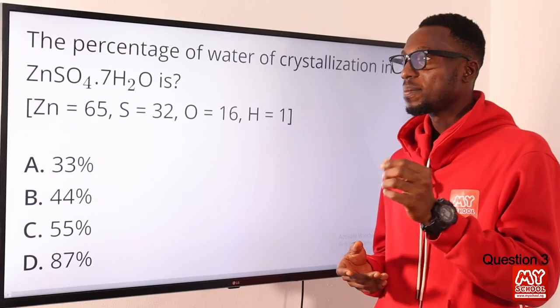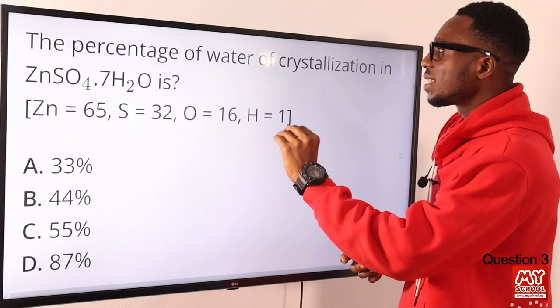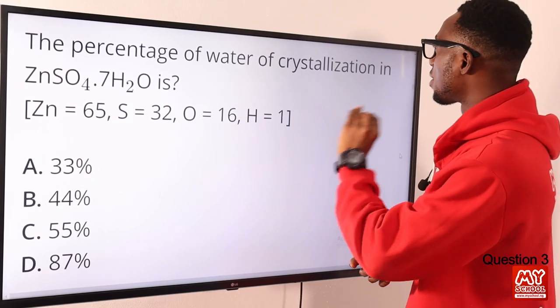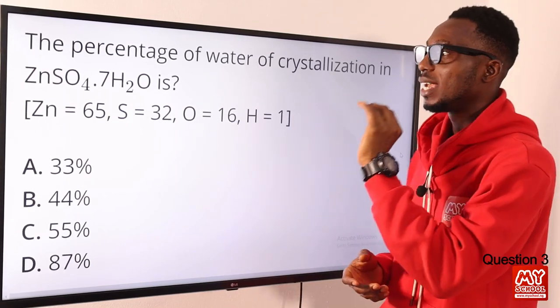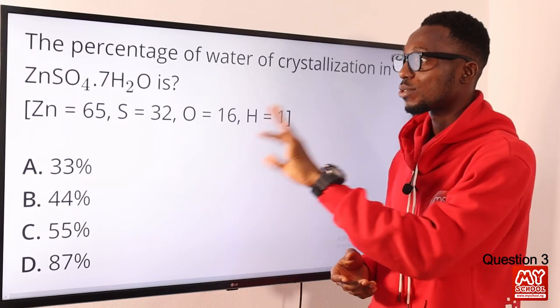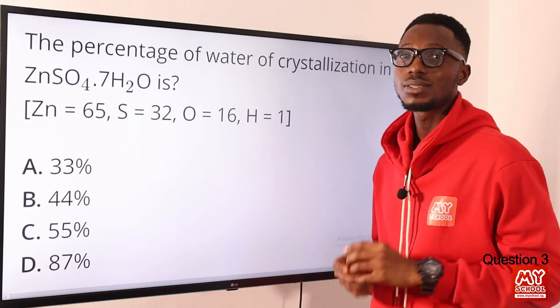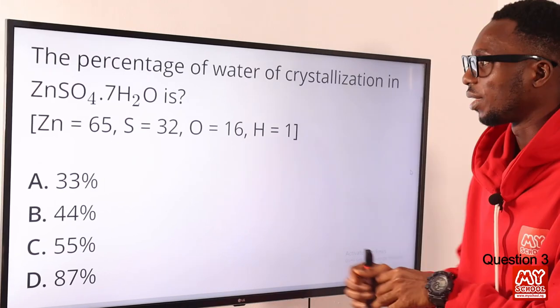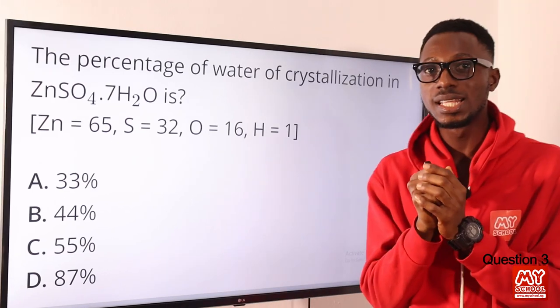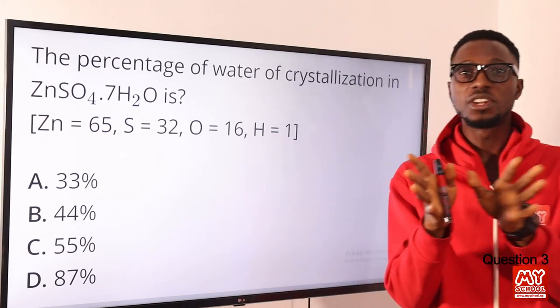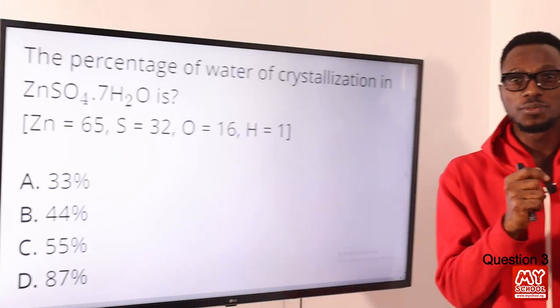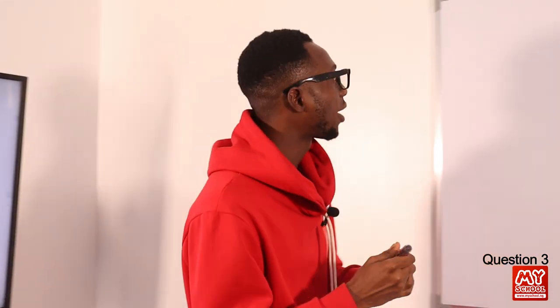Question 3: the percentage of water of crystallization in zinc sulfate heptahydrate (ZnSO₄·7H₂O) is what? Let's do this calculation together — let's move to the whiteboard.